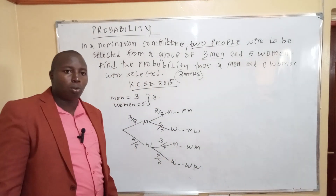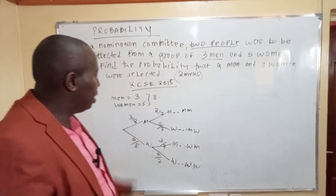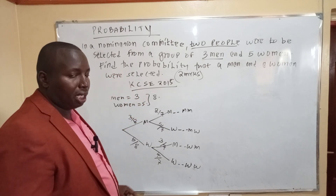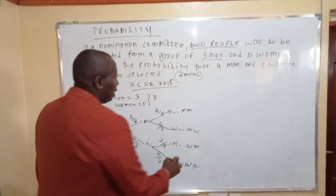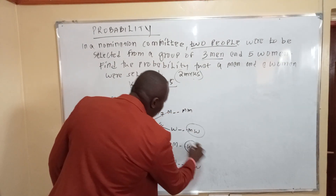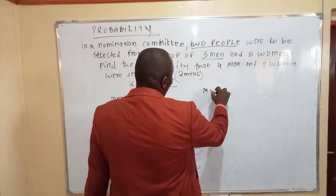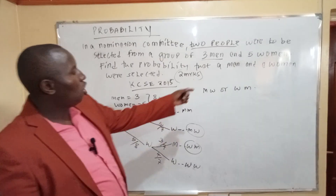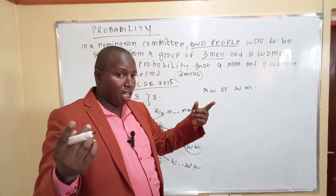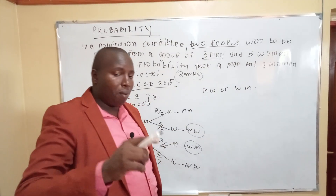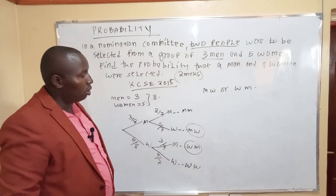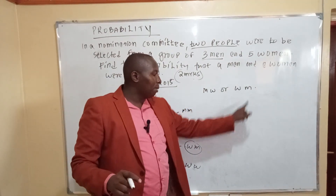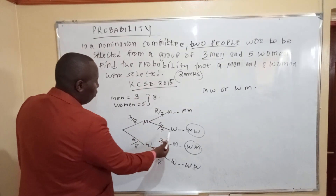With this diagram you can now answer the question. Find the probability that a man and a woman were selected. The relevant outcomes are man-woman or woman-man — in any order. Since you are not given a specific order to follow, both outcomes count: man then woman, or woman then man.